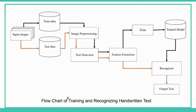Here is the flow chart of training and recognizing handwritten text. There are two main phases: the train phase and the test phase, but they share three common steps. The first step is image processing — blurring, Gaussian filter, rotating, and scaling to the right position. Second is text detection, which usually includes word segmentation. Finally, we extract image features and recognize them, converting the image matrix into ASCII code for the computer to understand.